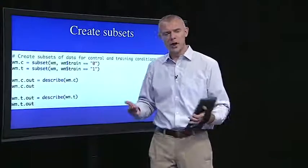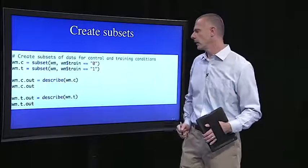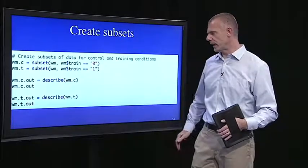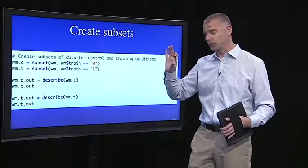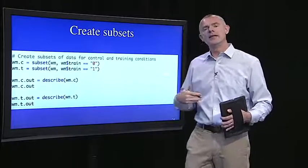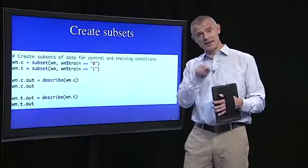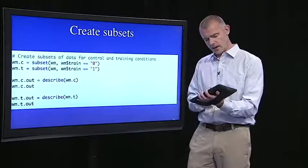It's one of the beautiful things about R. If it doesn't have the function, well, write the function and save it. And then you have it for the rest of your life. So what we're going to do is use the describe function to get the descriptives and then assign it to a new object like WM.C.out. And then we can access the statistics in that object.